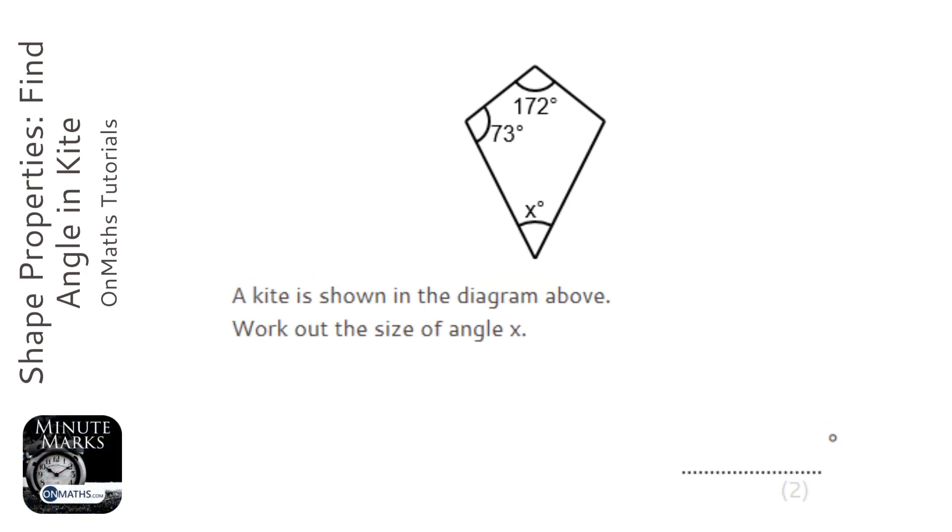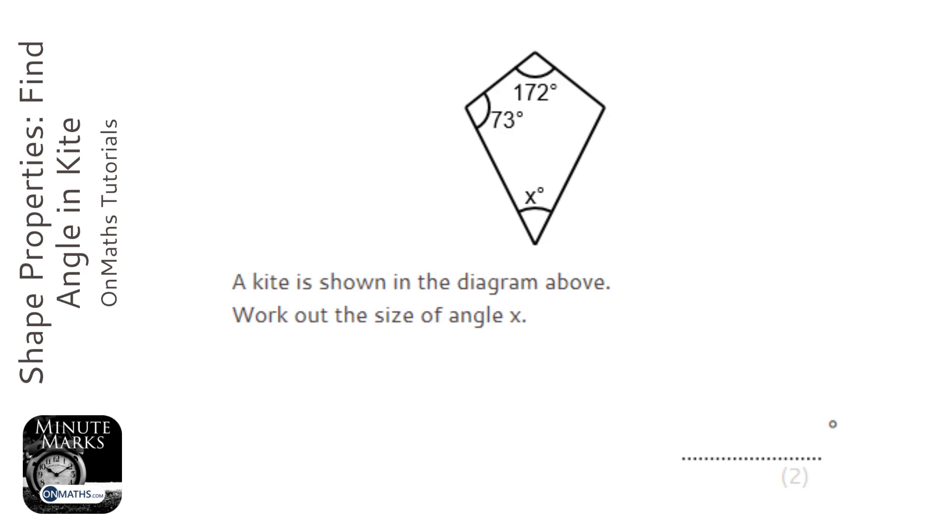Alright, something you'll need to realize about a kite, which this shape is, is that the left and right, if the kite is this way up, the left and right angles are equal. So this is also 73 degrees.